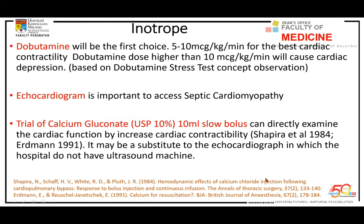For dobutamine dosing, the dobutamine stress test stages are: stage 1 no dobutamine, stage 2 at 5–10 mcg, stage 3 at 15 mcg (which stresses the patient), and stage 4 back to normal. I suggest starting at only 5–10 mcg. Increasing beyond 10 means the heart won't provide additional cardiac output — we just make the heart pump faster, pushing toward heart failure. If you start above 10 mcg, look for other parameters. Echo can assess septic cardiomyopathy. If no echo is available, give a 10 mL bolus of calcium gluconate — if BP increases, cardiac contractility is impacted.